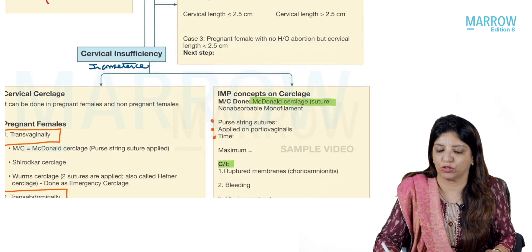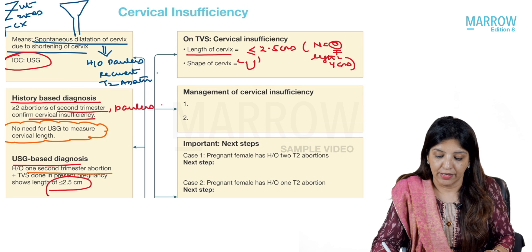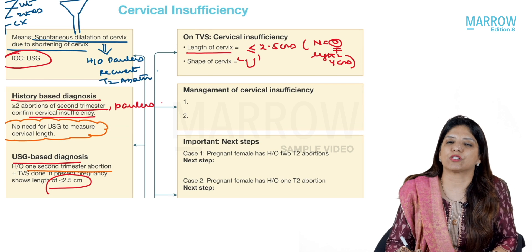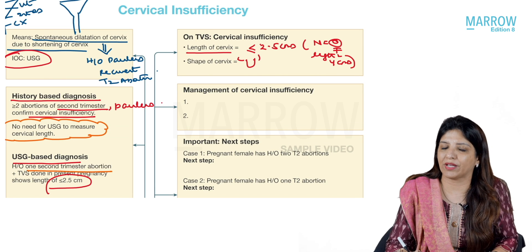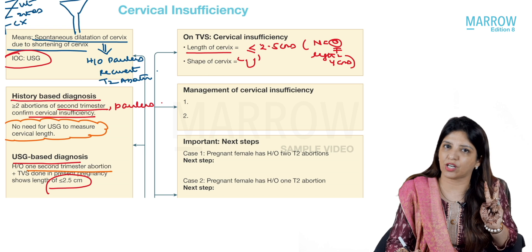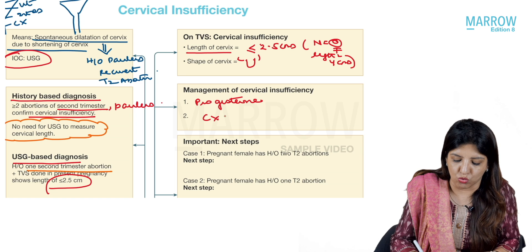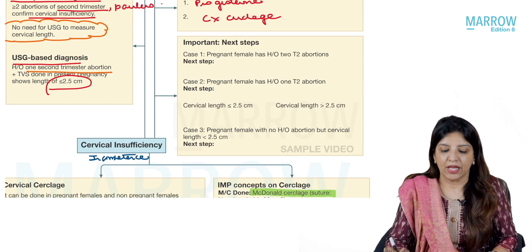This T→Y→V→U shape change is a very important question for PG exams. For cervical insufficiency, the shape of the cervix is U-shaped. Management of cervical insufficiency has two options: progesterone, and cervical cerclage.